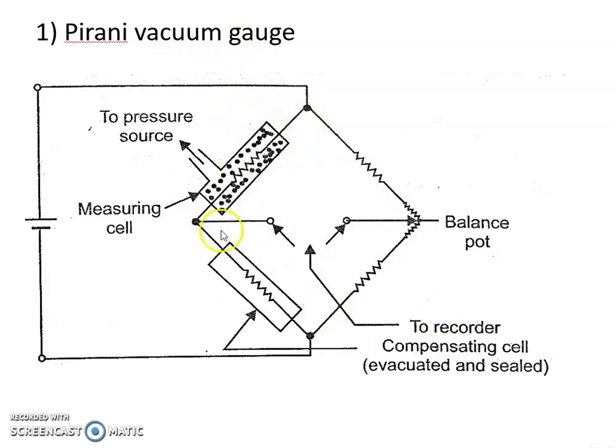This Pirani vacuum gauge is in the form of a bridge and consists of a single filament enclosed in a glass tube or glass chamber whose pressure is to be measured. As the surrounding pressure changes, the filament temperature also changes.